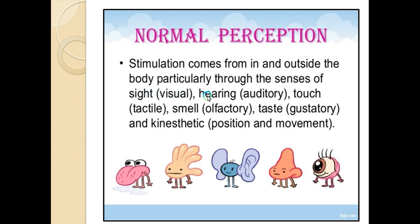Normal perception occurs through different sense organs: sight is visual, hearing is auditory, touch is tactile, smell is olfactory, taste is gustatory, and kinesthetic — which is related to body position. These are the different ways we perceive stimuli.